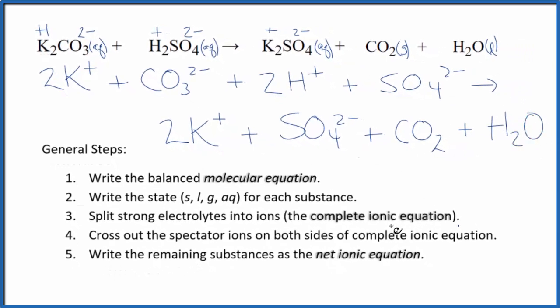So this is the complete ionic equation. Now we can cross out spectator ions. They're on both sides of the complete ionic equation. They haven't changed, so we're not really interested in them.